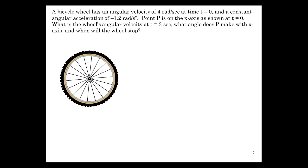We have a bicycle wheel. Angular velocity 4 radians per second at time T is equal to 0. It's got a constant angular acceleration of minus 1.2 radians per second squared, and point P is on the x-axis at T is equal to 0. We're going to figure out the wheel's angular velocity at T is equal to 3 seconds, what angle P makes with the x-axis, and when will the wheel stop.